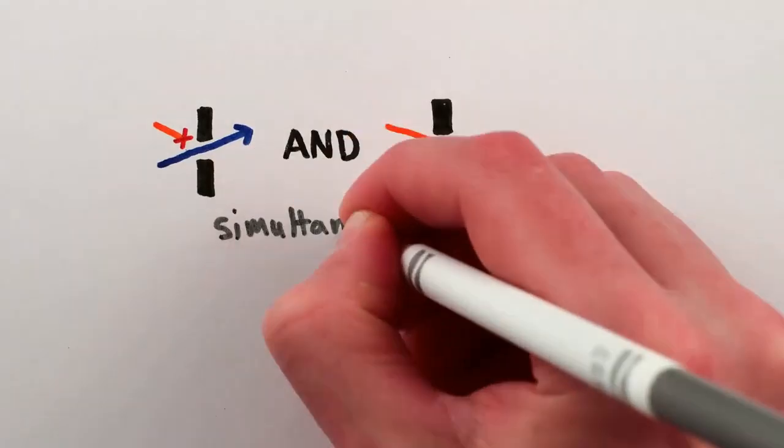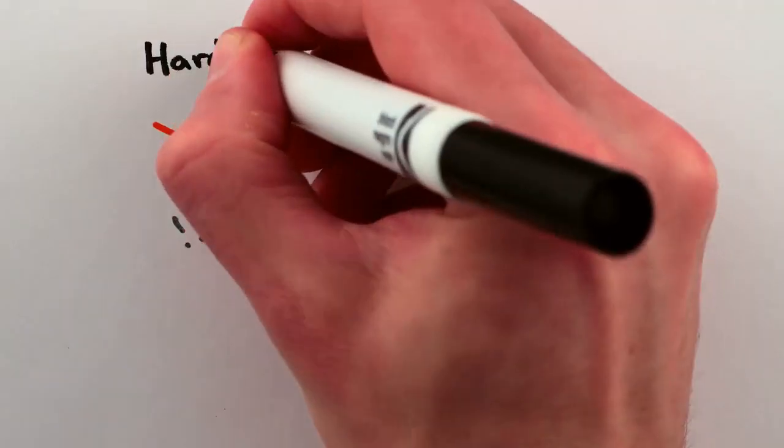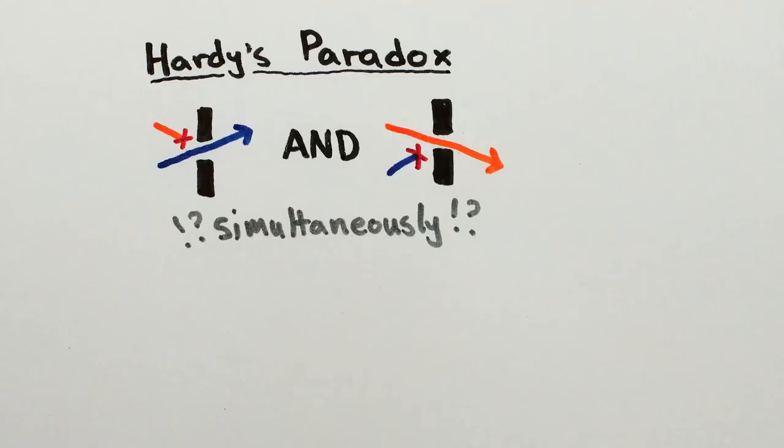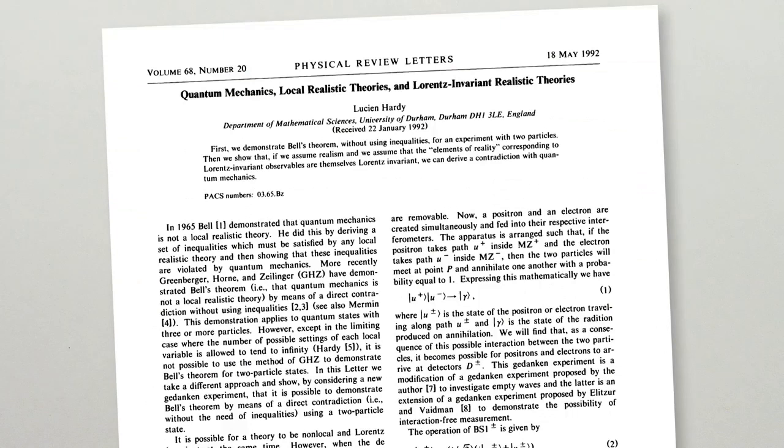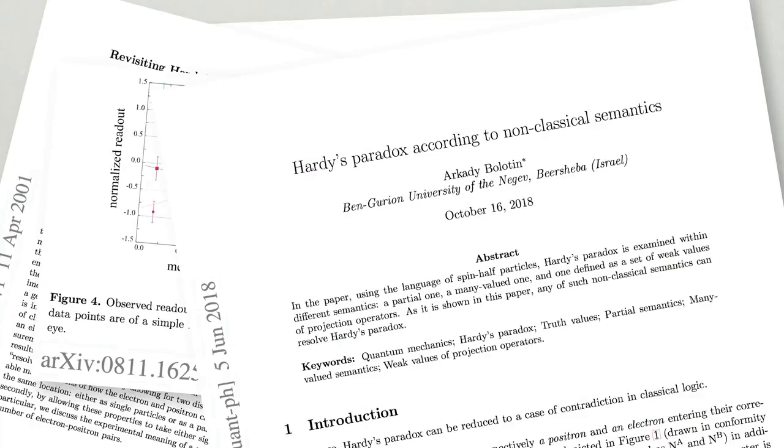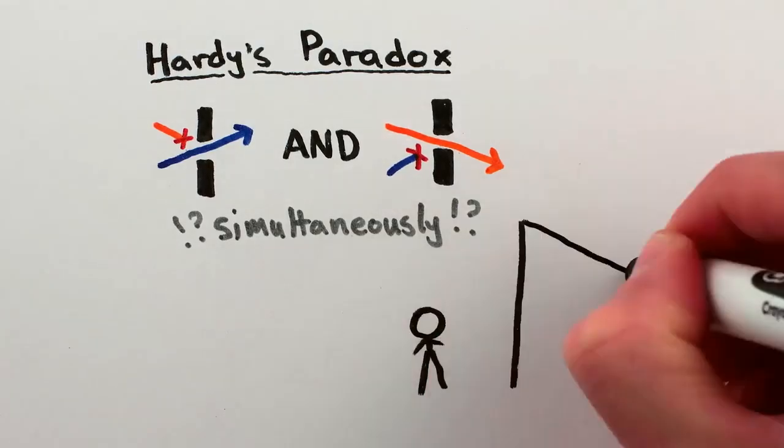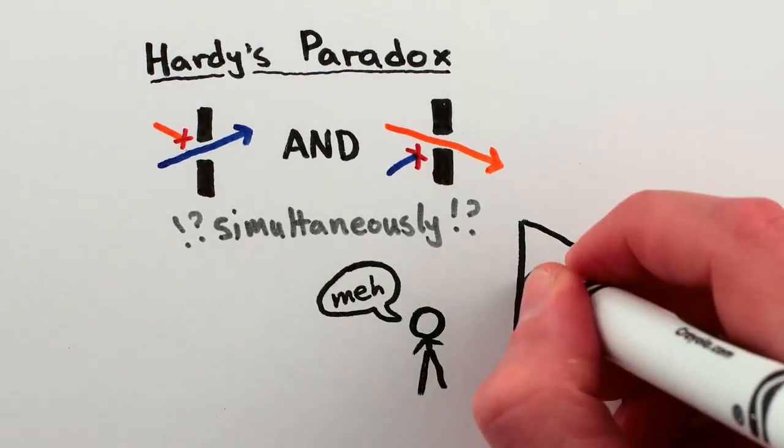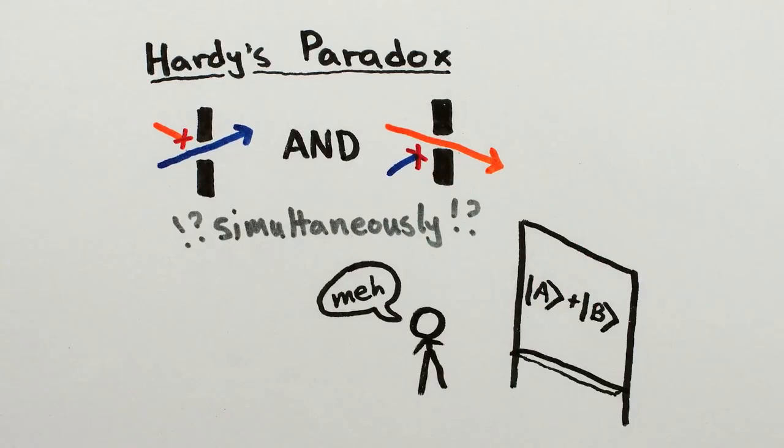Which of course seems impossible, and is why this situation has been called a paradox. And it's certainly thought-provoking if you like to think about local realism or contextuality or weak measurement values or the interaction between classical logic and quantum mechanics. But it's not really that surprising, as long as you believe that quantum particles can be in superpositions.